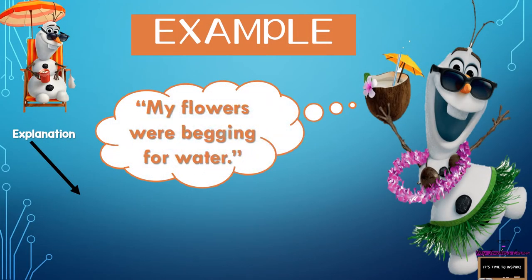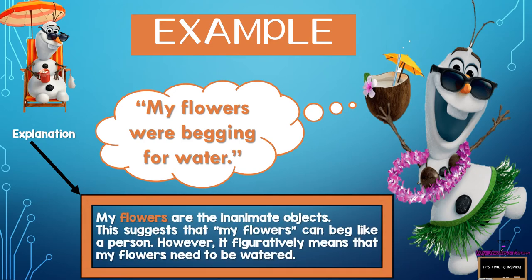Example number two: 'My flowers were begging for water.' Can flowers really beg for water, like how you would beg for a piece of candy? No. Flowers do not beg for water. This is an example of personification — an example of an object being personified. The flowers are the inanimate object. This suggests that the flowers can beg like a person; however, it figuratively means that my flowers need to be watered. That's all that it's saying.